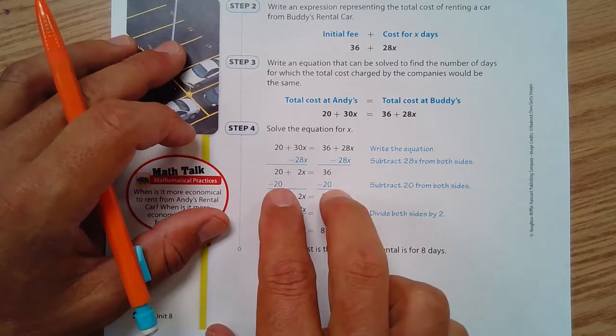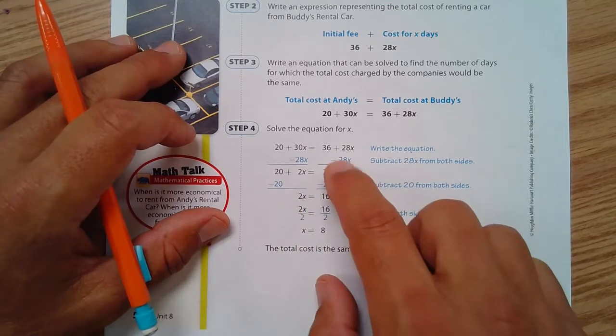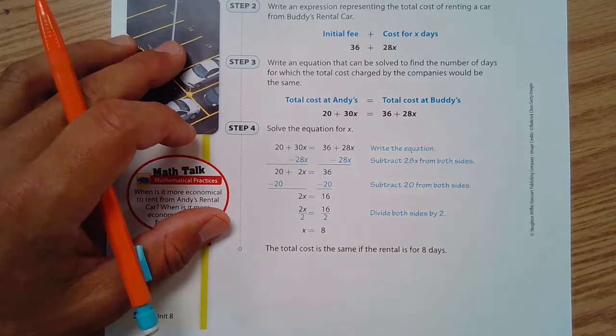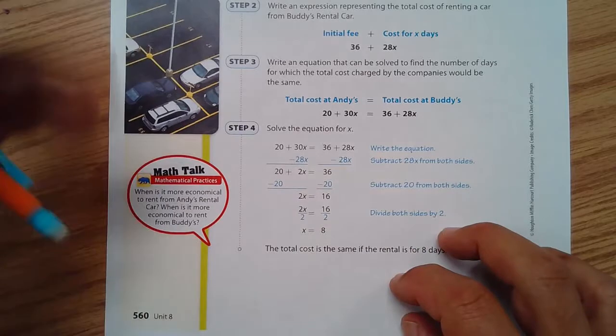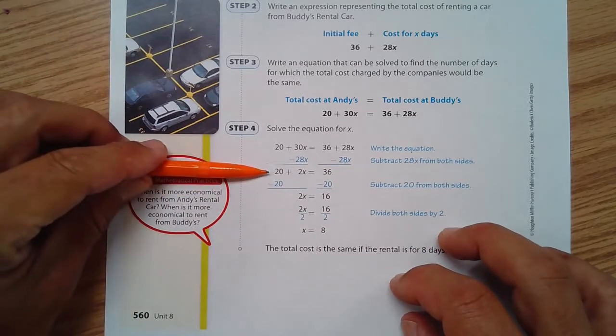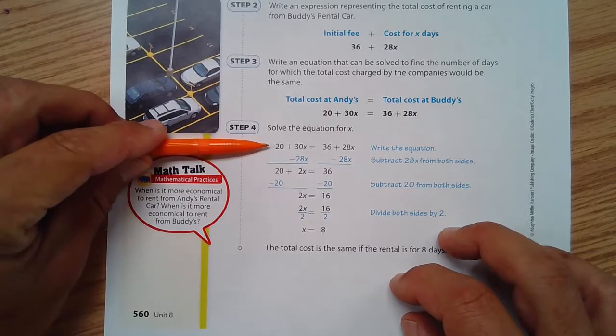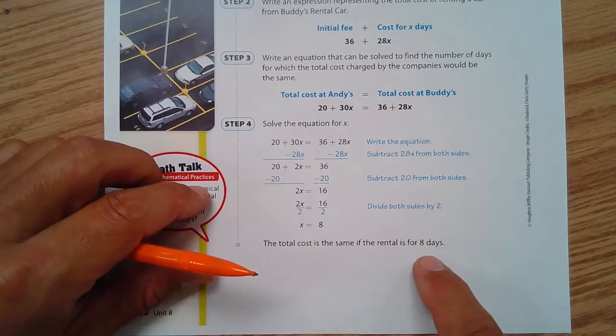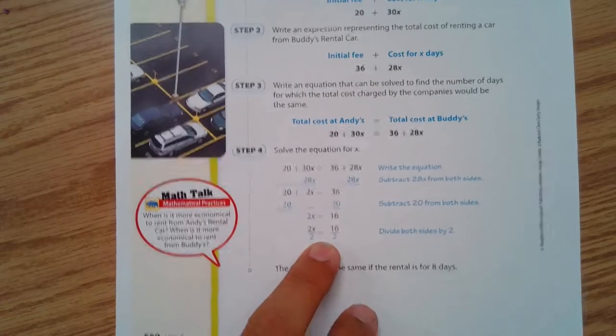Now we have a two-step equation where we subtract 20 from both sides: 36 minus 20 is 16. Divide both sides by 2, that's 8. You've solved equations like this before, just adding on an additional layer. The total cost is the same if the rental is for eight days.